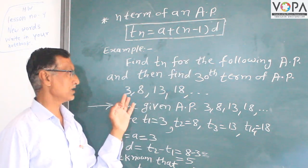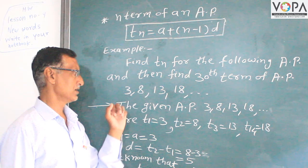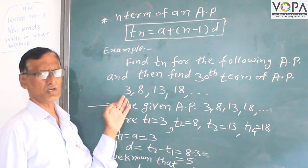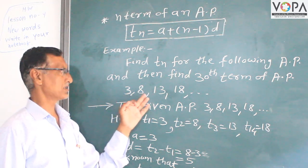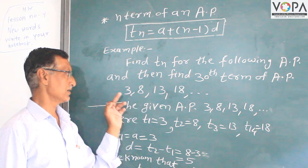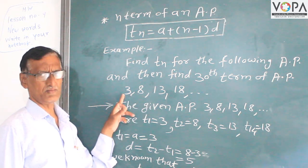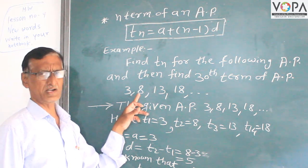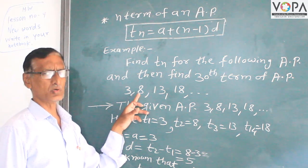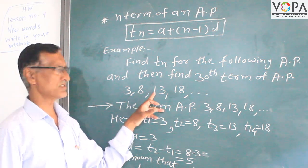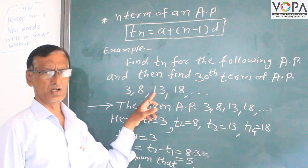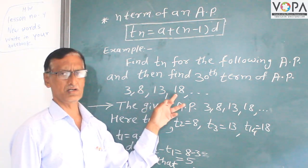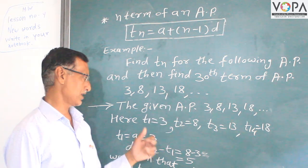The given AP is 3, 8, 13, 18. In this sequence, 3 is in the first position, so it is t1. The value 8 is in the second position, so it is t2. The value 13 is in the third position, so it is t3. The value 18 is in the fourth position, so it is t4.